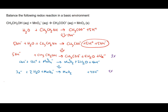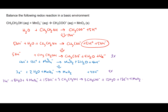After multiplying through, what we get is: 12 electrons plus 8H2O plus 4MnO4- plus 15OH- plus 3CH3CH2OH forms 3CH3COO- plus 12H2O plus 12 electrons plus 4MnO2 plus 16OH-. That's both half reactions added together.